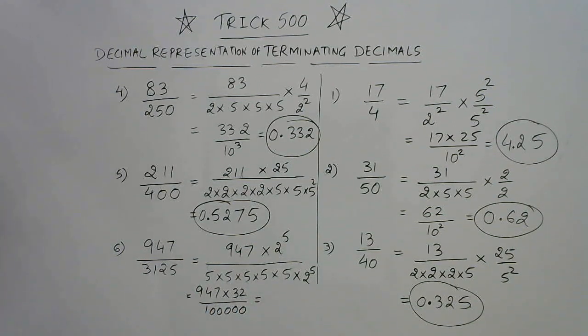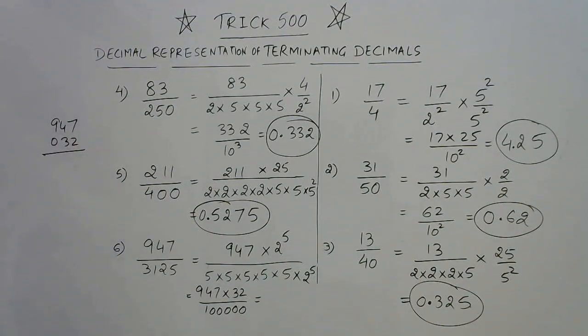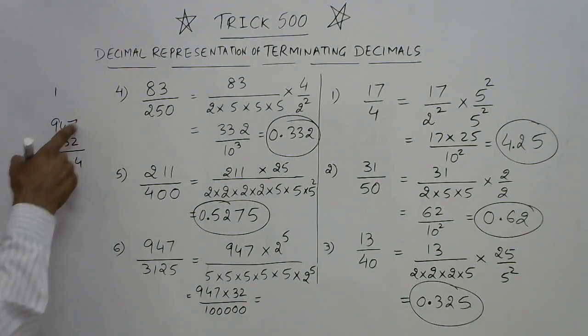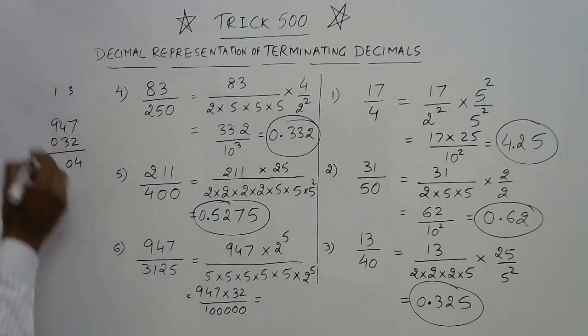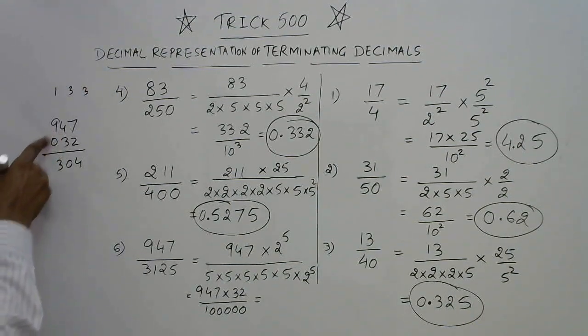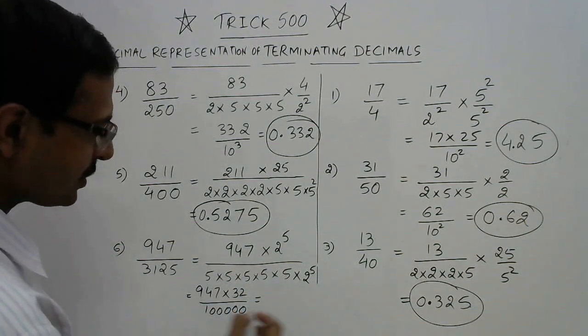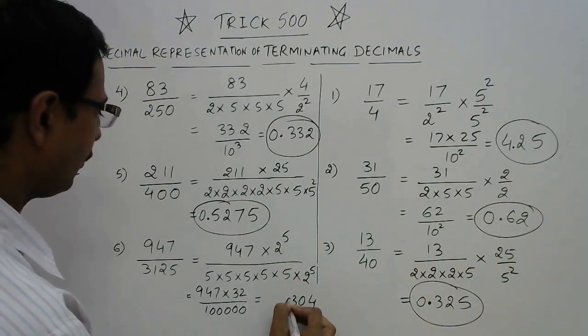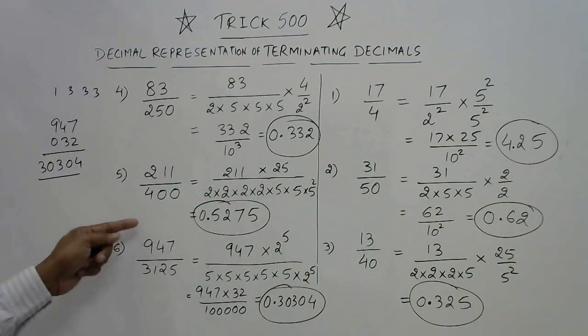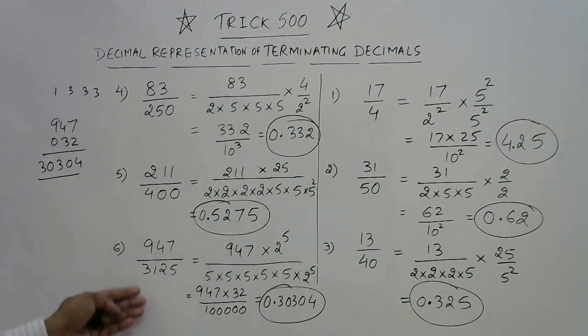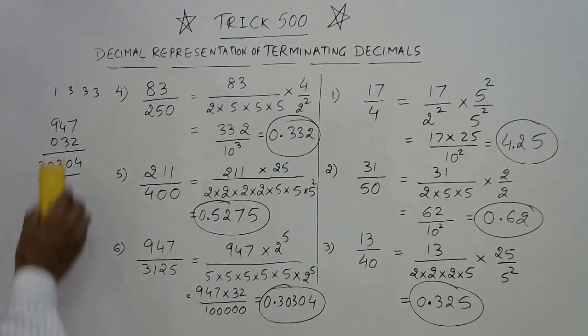So let us multiply 947 and 32. We can do it in one step using Vedic maths: 7 times 2 is 14, 1 carry; 21, 29, 30, 0, 3 carry; 18 and 12, 30, 33, 3 carry; 27 and 3, again 3 carry and 3. So 30304. 5 zeros means 1, 2, 3, 4, 5 and decimal point. So 30304, 5 digits from the right side: 0.30304 is the required decimal representation of 947 upon 3125. So these are the methods through which you can find the terminating decimals of various fractions.